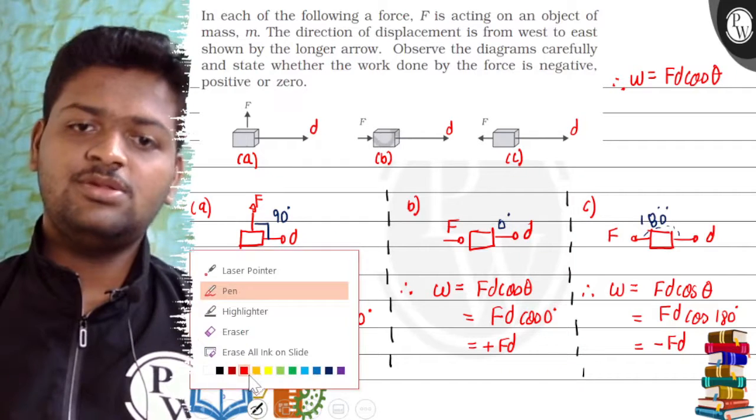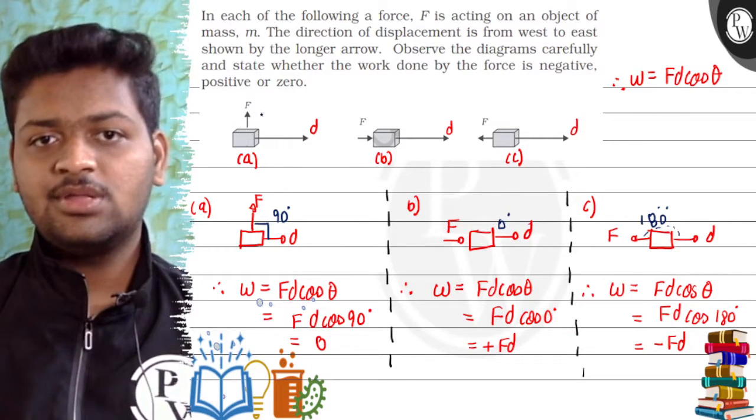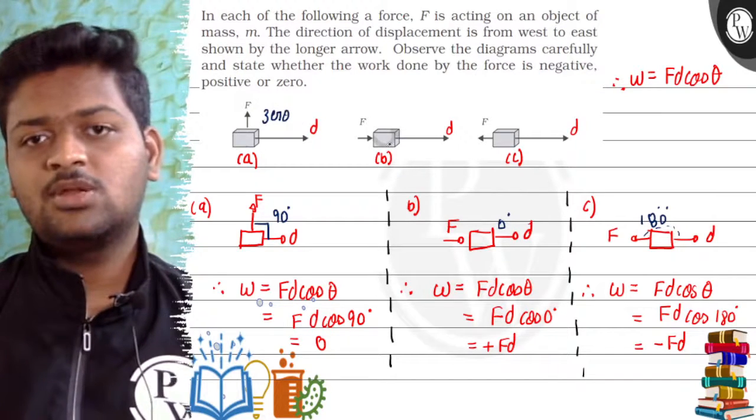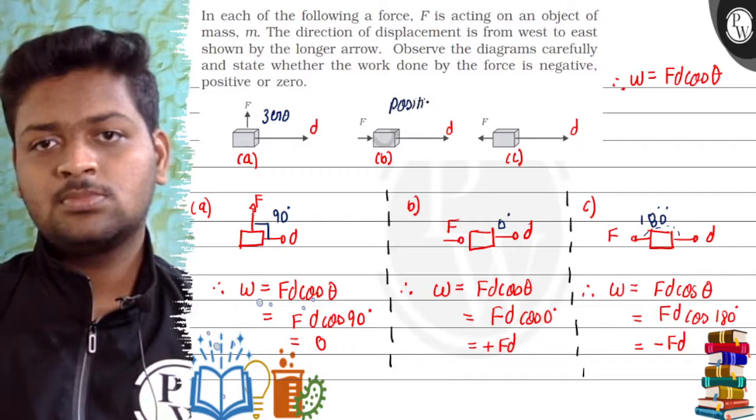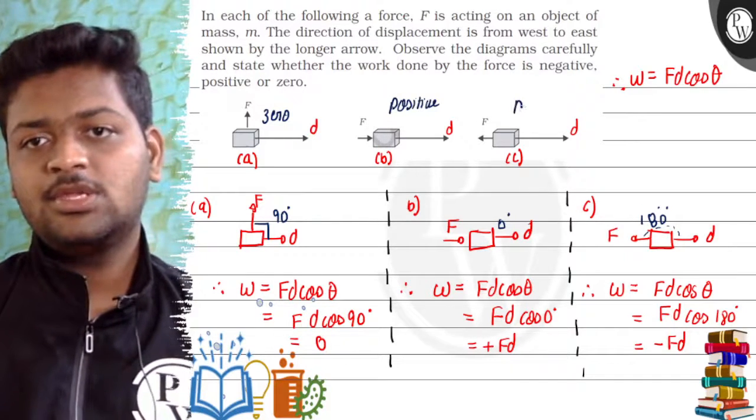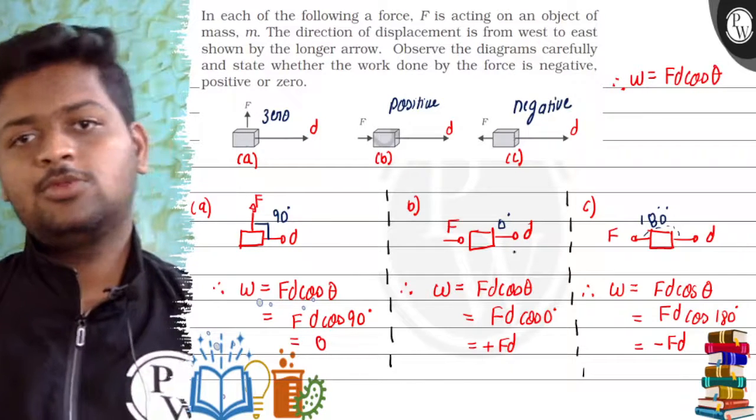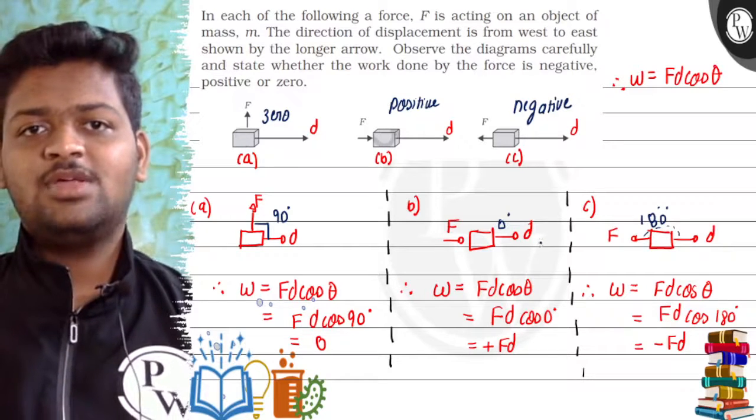So these are our final answers to the question. We can write here the work done is 0 in the first case, positive work done in the second case, and in the third case, that's negative work done. So this is the answer to our question. I hope you understood the question. Thank you so much.